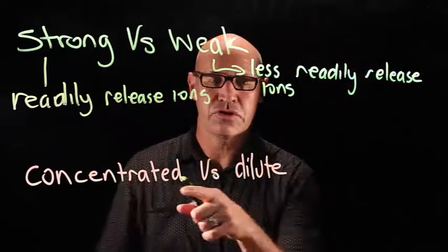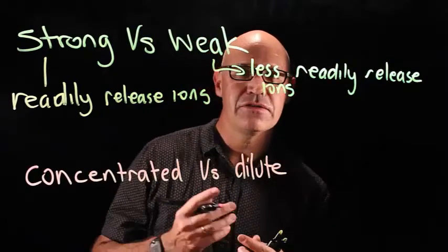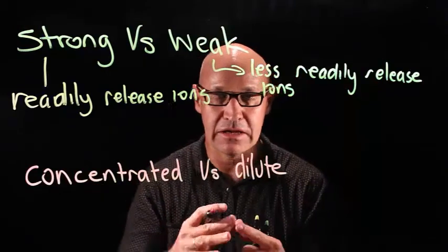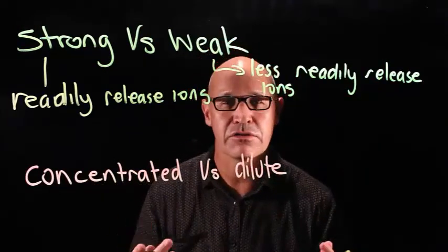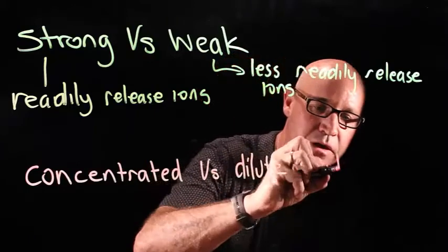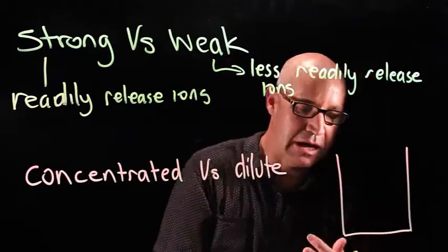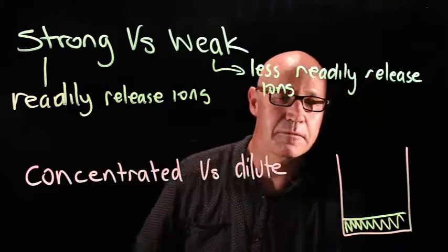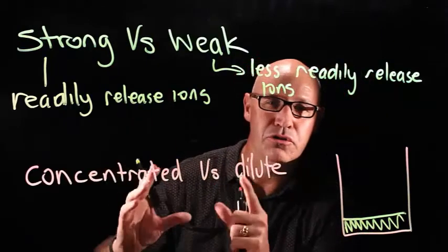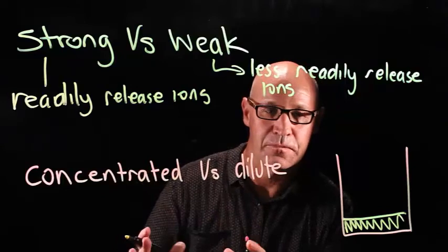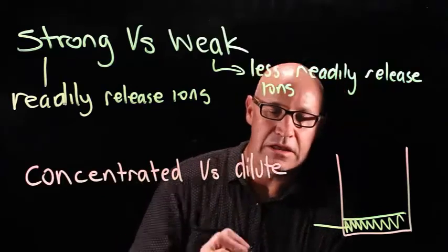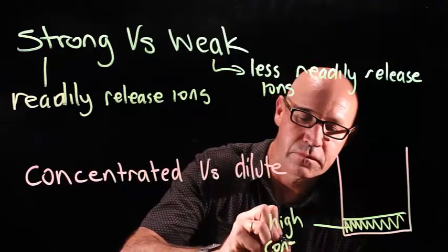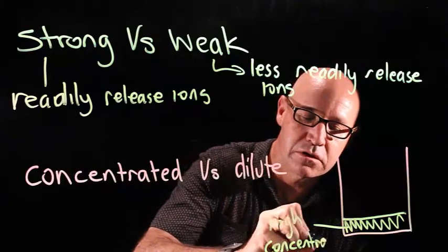When we're talking about concentrated versus dilute, what we're talking about is the amount of water or other solvent that is in the solution. Consider it like when you're making cordial. Let's draw a picture of a cup, and you pour your lemon cordial into the bottom. That's the concentrated cordial that you bought at the shops. In this cordial, there is a high concentration of cordial molecules.